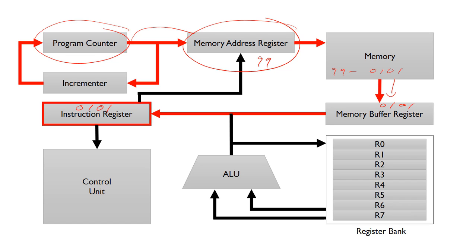So 0101 will be copied to the instruction register. In this example, we assumed we're fetching instruction 99. The incrementer would increase — so if we're executing instructions one byte at a time, 99 would increase to 100, and then the next time around we'd fetch instruction 100, and so on.